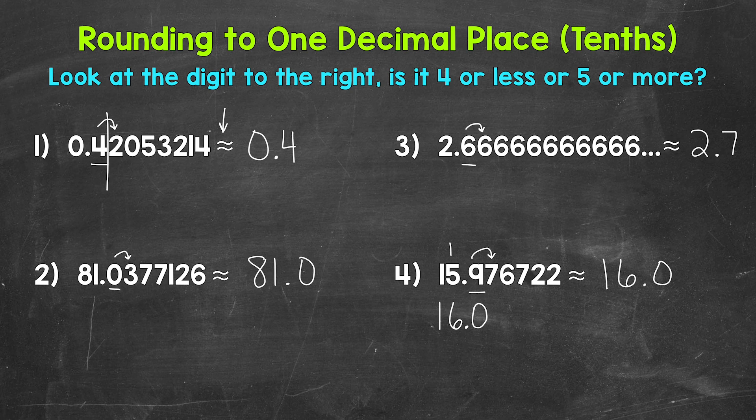Sixteen and zero tenths is equal to sixteen, but I included that zero to show that we rounded to the tenths place. I do want to mention that there are different ways to think through rounding up a nine. I dropped the link to my video about rounding up nines down in the description if you need more examples.